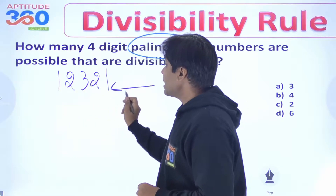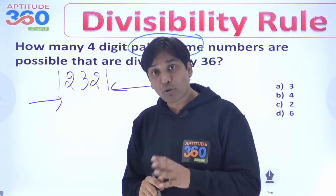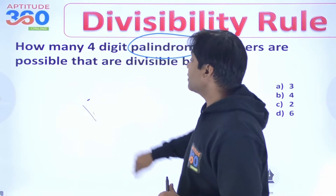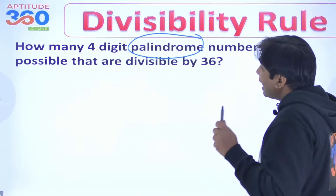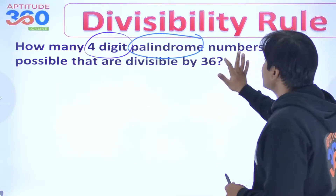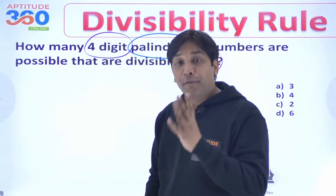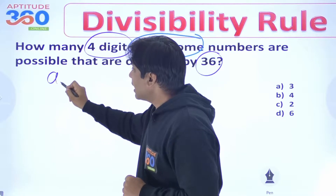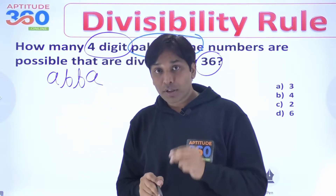1, 2, 3, 4 — start it from either side, the number is going to be the same. So we understand what is the meaning of a palindrome. And they are asking us to find out a 4-digit palindrome that is divisible by 36. So a 4-digit palindrome would look like this: A, B, B, A.